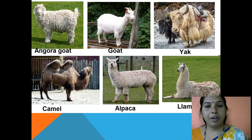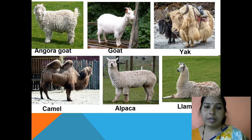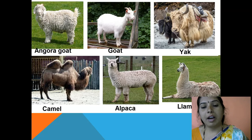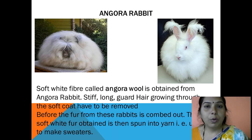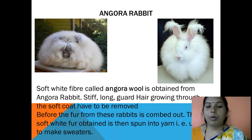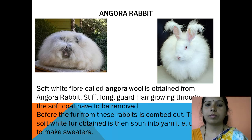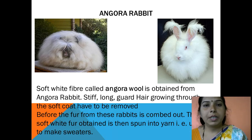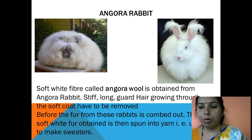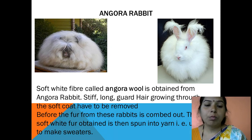Here you can see different animals on screen: Angora goat, goat, yak, camel, alpaca, and llama. Also the Angora rabbit — a cute animal that provides a soft white fiber called Angora wool. Keep in mind: wool obtained from the Angora rabbit is called Angora wool, whereas wool obtained from the Angora goat is called mohair.